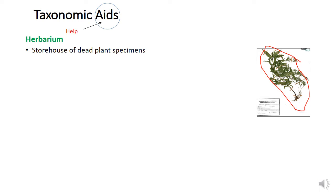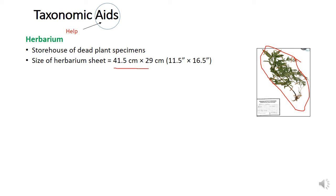The dimension of the herbarium sheet is 41.5 cm by 29 cm. What do we do in herbarium? We preserve the plant specimens. Suppose you take a plant from the ground and mount it on herbarium sheets — because there is moisture in the plant, moisture will grow and your herbarium sheets will be lost. This is why we must first dry the plant specimen, then press it, and after that preserve it.